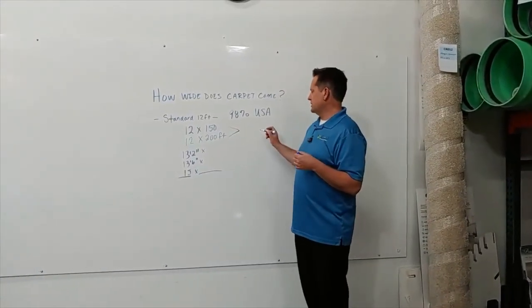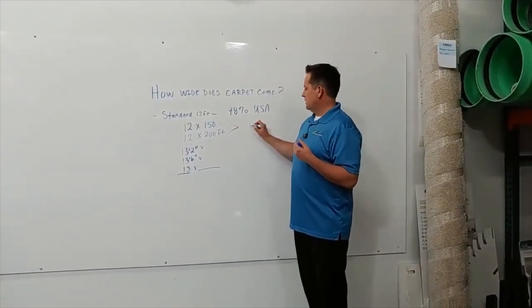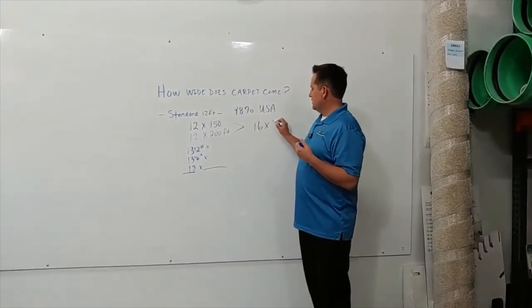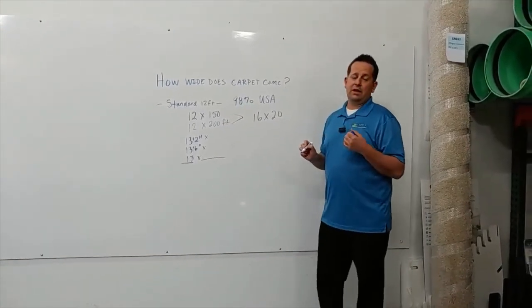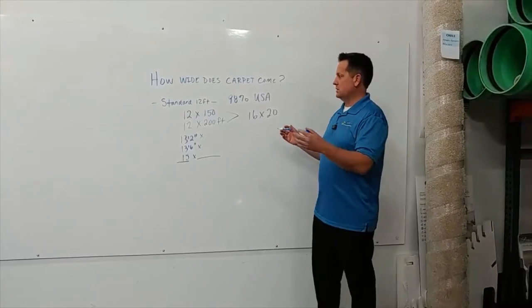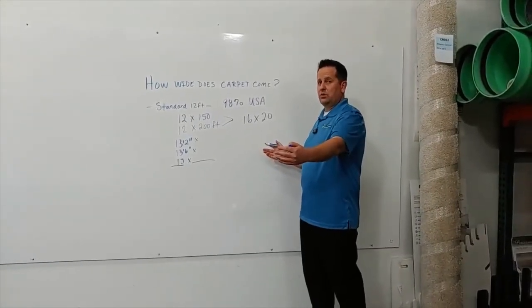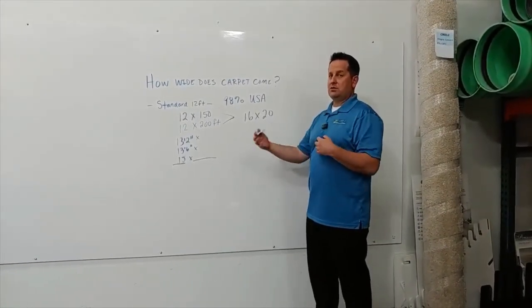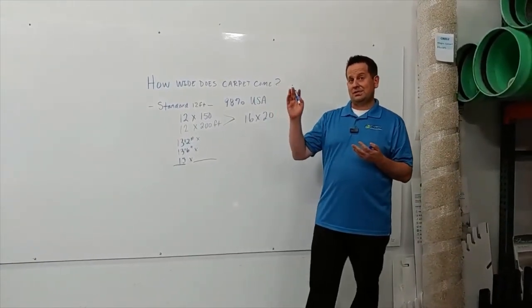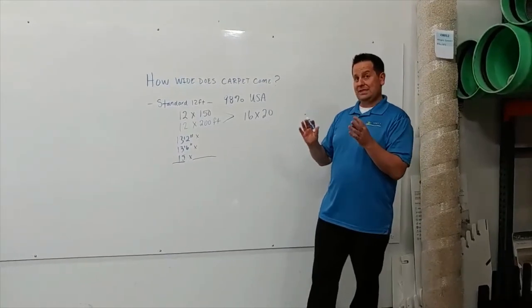So if you have a room that's, I don't know, let's say 16 by 20, you are going to have to put a seam in that room. There's no way around it. They're not going to custom widen the width for you because that would make the manufacturing process tedious and slow, and it would up the cost significantly if they were just making little pieces.